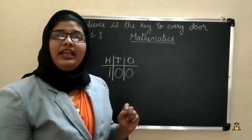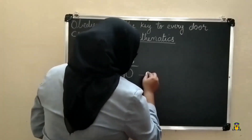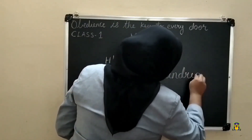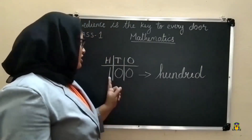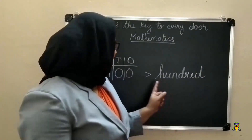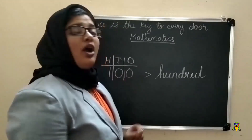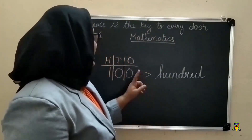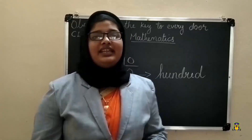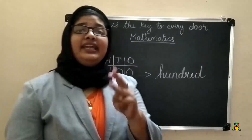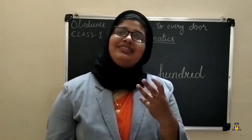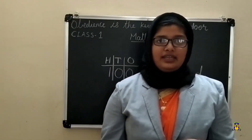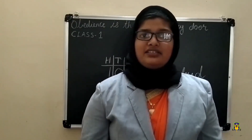What is the spelling of 100? H-U-N-D-R-E-D. We can also call this as one hundred. So 100 is the smallest 3-digit number. Three-digit means three numbers are there. 100 is the smallest 3-digit number.